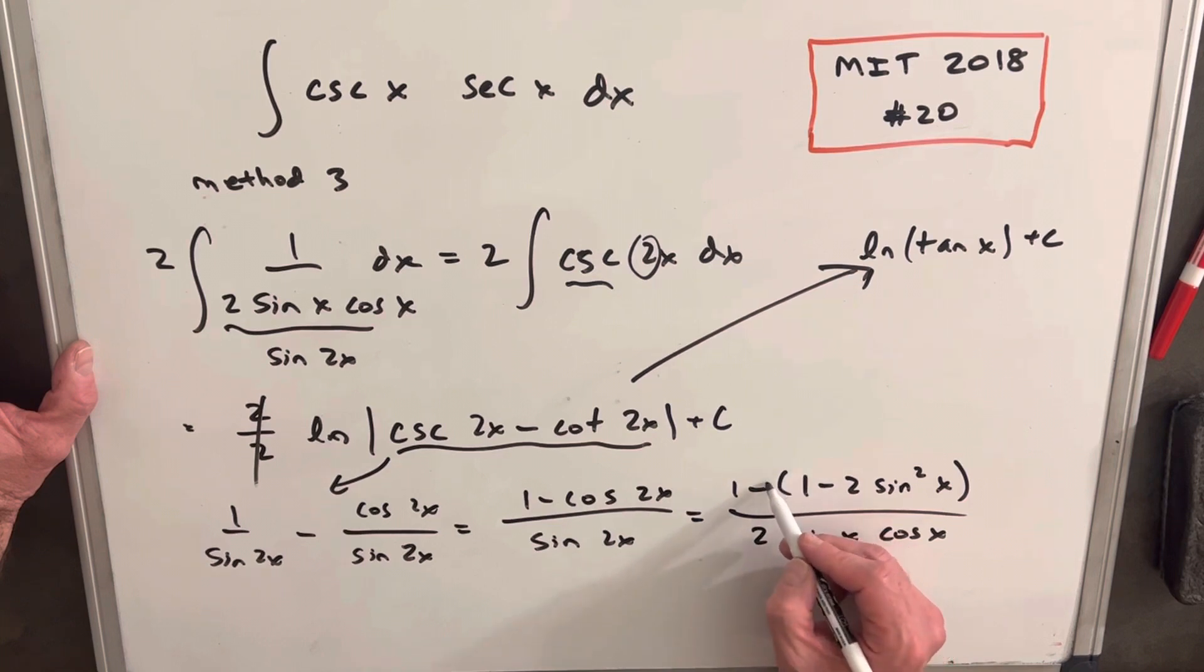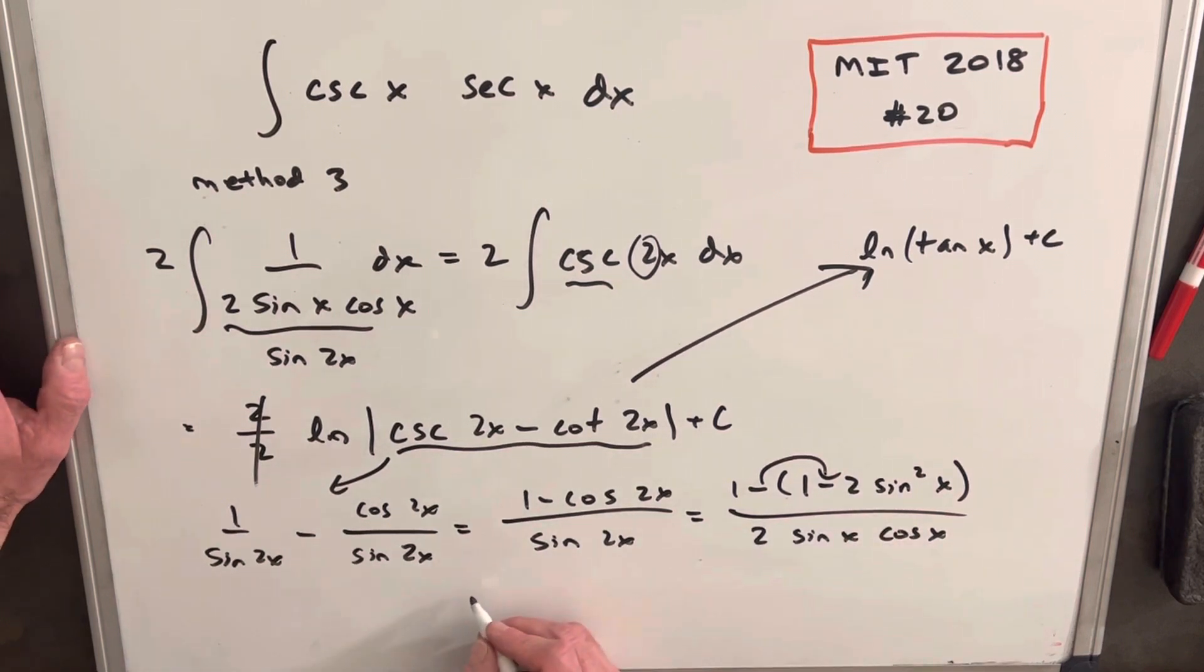Our 1s are going to cancel. Okay, 1 minus 1 is 0. We just need to distribute this minus in here. And then we're going to have a plus 2 sine squared x. So to finish this off, I think we're going to have 2 sine squared x over 2 sine x cosine x. So 2s cancel. 1 sine cancels. Sine x over cosine x is tan x.